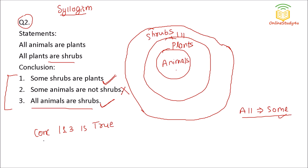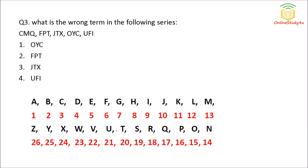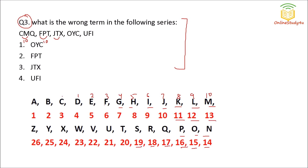Question number three: what is the wrong term in the following series? Starting with CMQ — C is here. Between the first and second letter the difference is 10: F to P is 10; J to T is 10; O to Y is 10. So the pattern is a difference of 10 between the first and second letter of each pair.